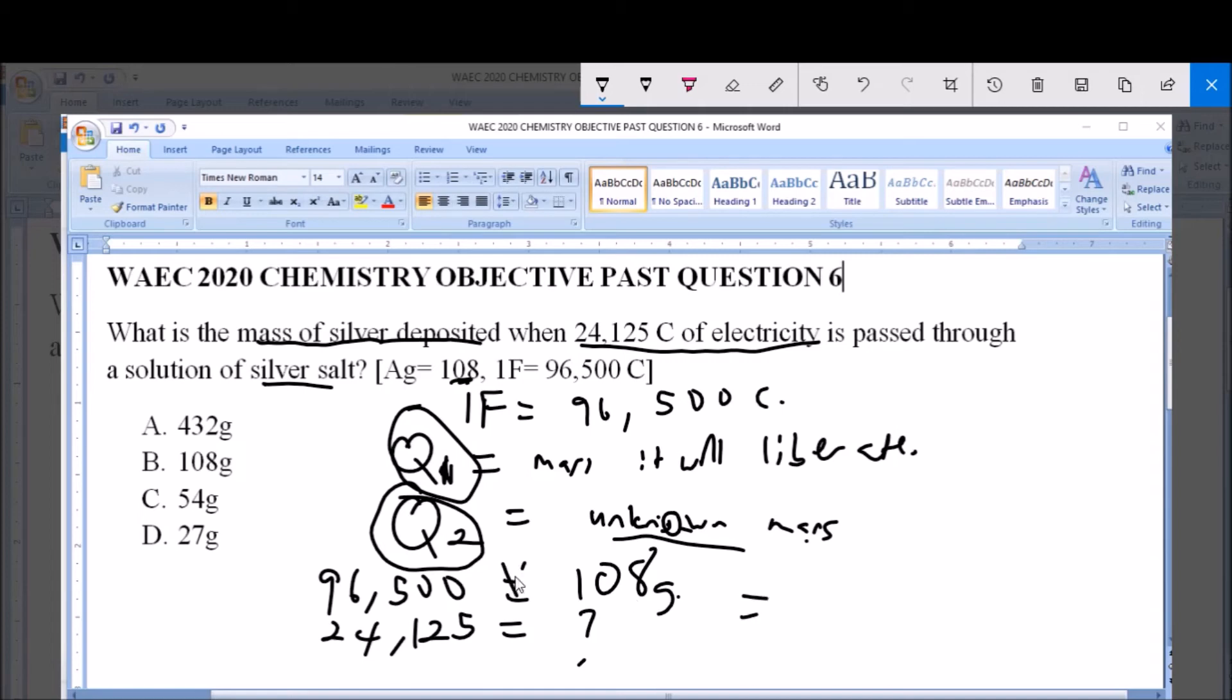cross multiply this, you have the unknown mass equal to 24,125 times 108 divided by 96,500. And if you make this calculation, it will give you 27 grams.